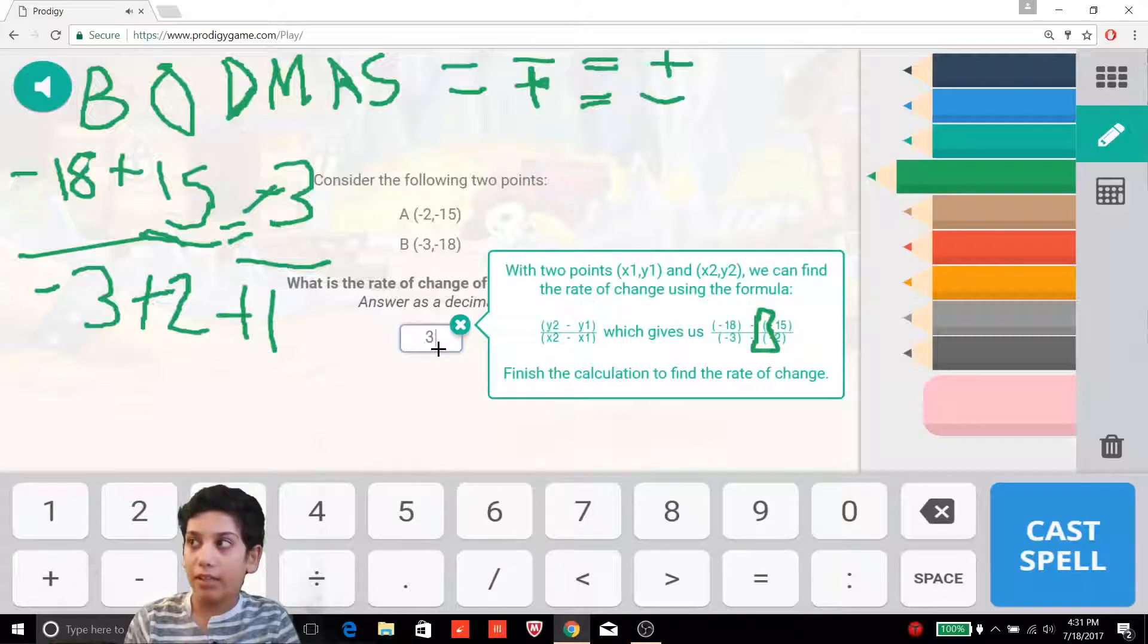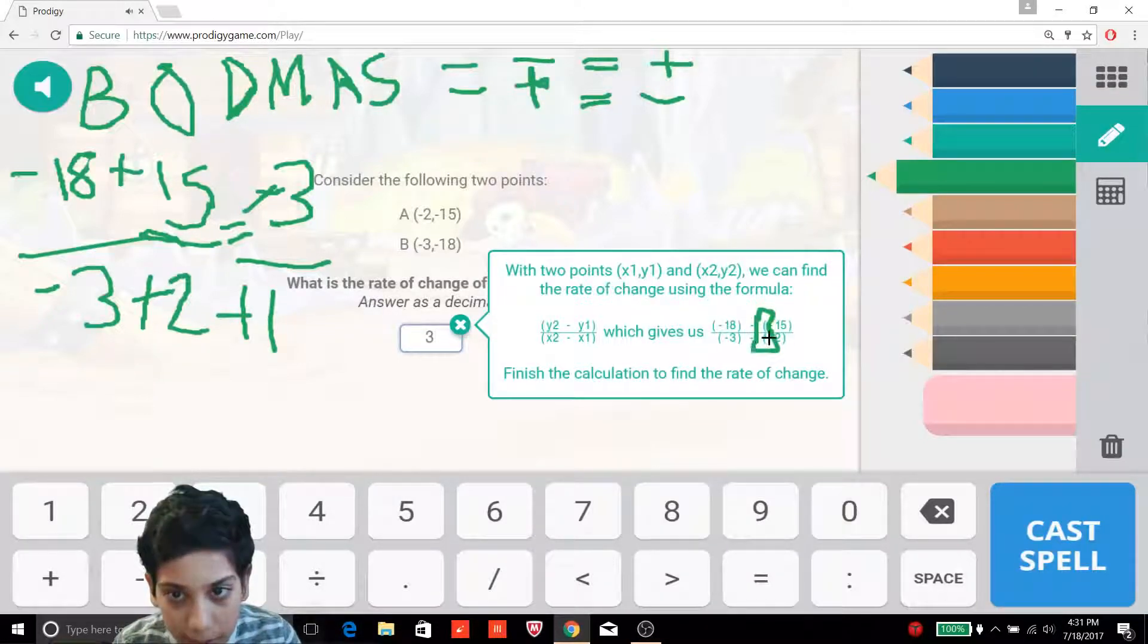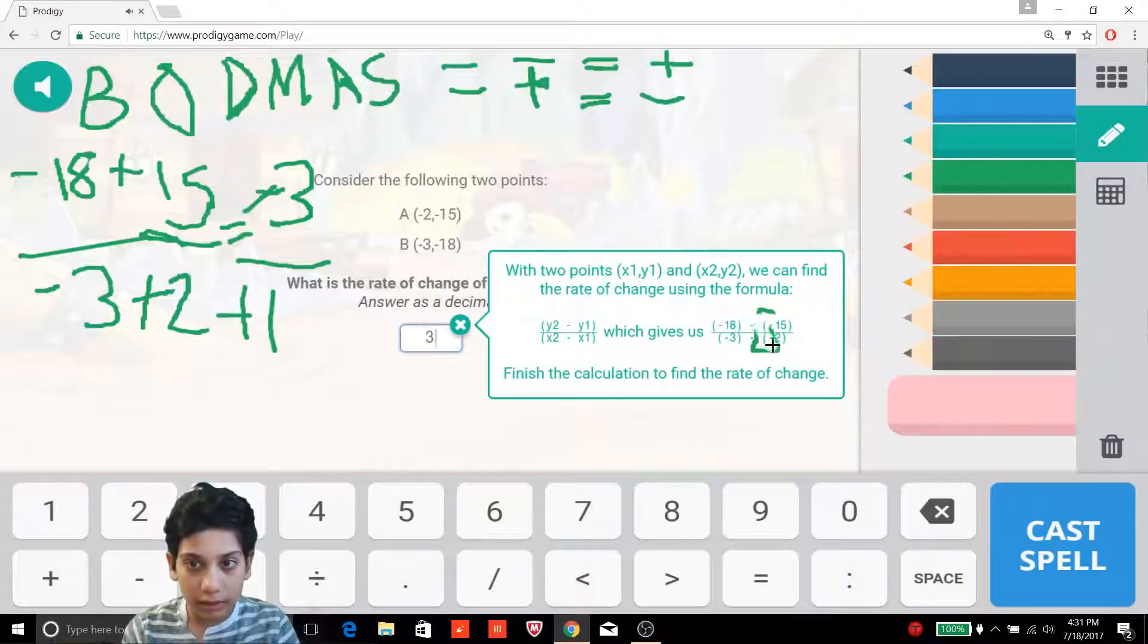So you might be wondering what's equivalent to minus? Well, it is minus plus. Minus plus is equivalent to minus. Do you see any minus pluses here? Nope, no minus plus. So let's check our answer and it is correct. Now I will erase this to give you a better view.